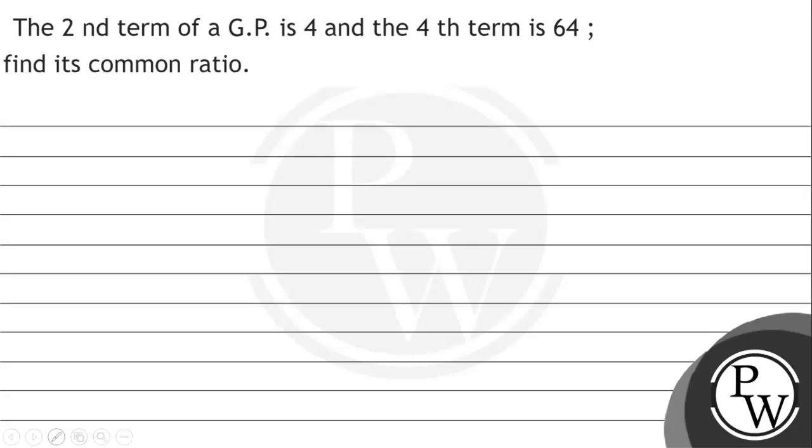Let's read this question. The second term of a G.P. is 4 and the fourth term is 64. Find the common ratio.